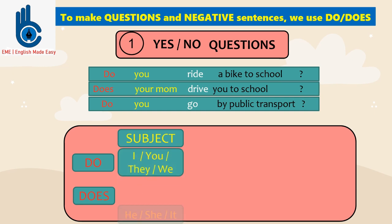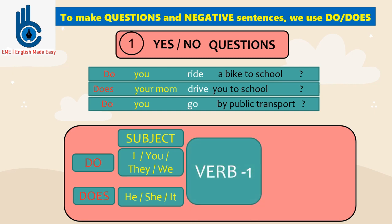While does is used for subject he, she, or it. After subject, we see verb one. Remember, there is no more S or ES, followed by a question mark.